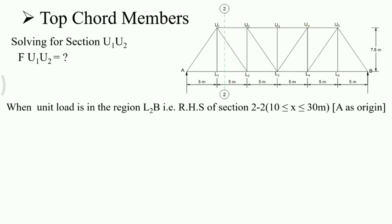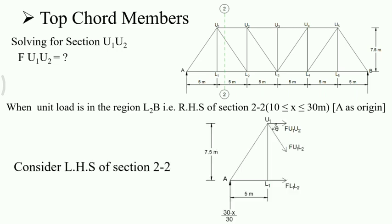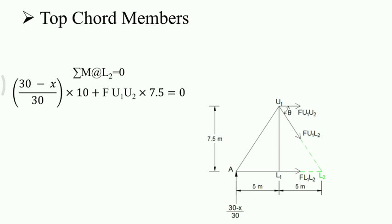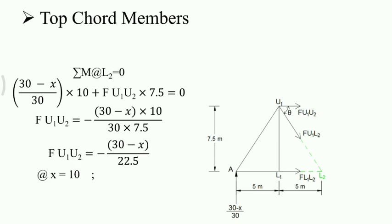Now we place the unit load on the right-hand side of section 2-2. For simplicity, we consider the left-hand side of section 2-2 and take the moment at L2. So: 30 minus X by 30 into 10 plus F of U1U2 into 7.5. Simplifying, with limits 10 to 30: at X equal to 10 meters the ordinate is minus 0.888, and at X equal to 30 meters the ordinate is 0.